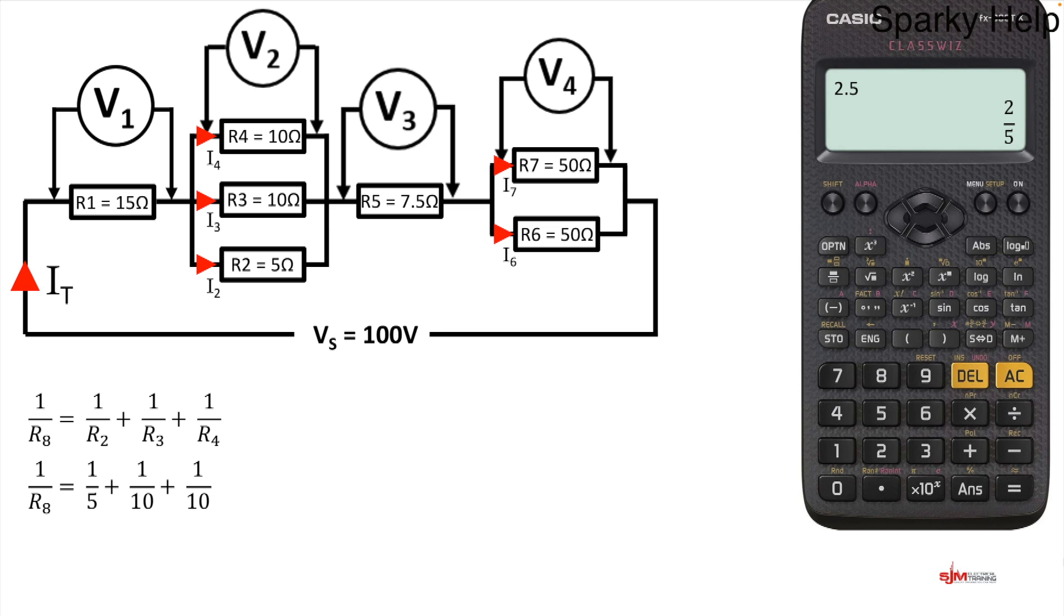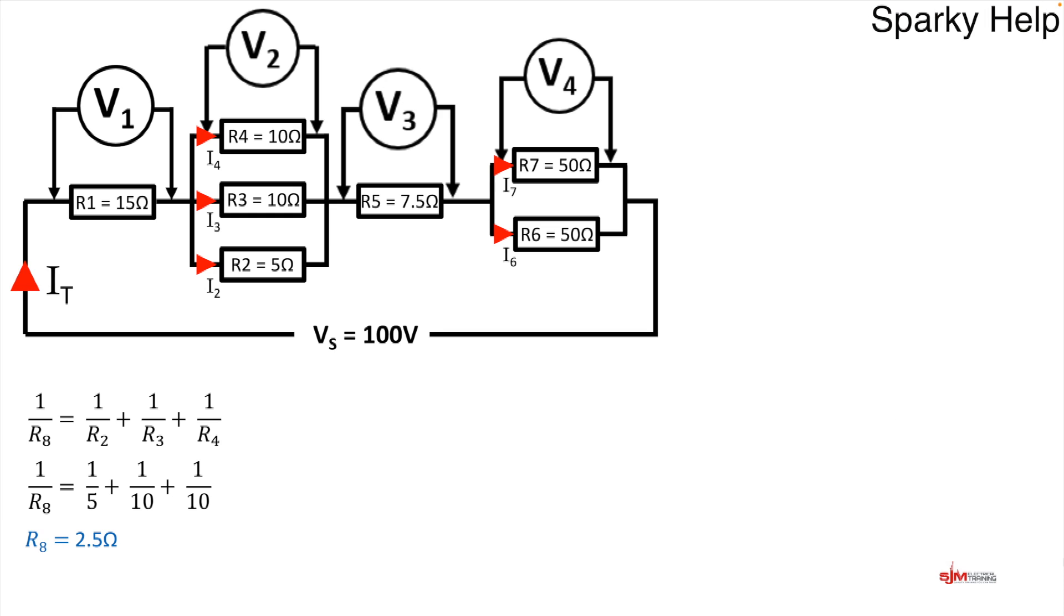Hopefully if you've been playing along you can recognize that two tens in parallel become five. Effectively then you've got two fives in parallel which become two and a half. So that middle section with three resistors in parallel can be replaced with one resistor of a value of two and a half ohms. And we'll call that one R8.